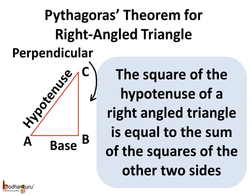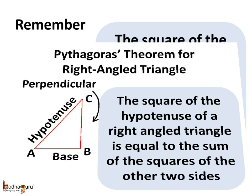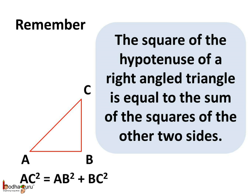So remember children — what is Pythagoras theorem? The Pythagoras theorem explains the relation between the sides of a right angle triangle. It says the square of the hypotenuse is equal to the sum of the squares of the other two sides, meaning: square of hypotenuse equals square of base plus square of perpendicular. For example, in right angle triangle ABC, AC is the hypotenuse, AB is the base, and BC is the perpendicular, so AC squared equals AB squared plus BC squared. If we know the length of any two sides, we can find the third side using this theorem.